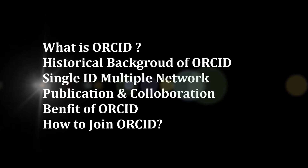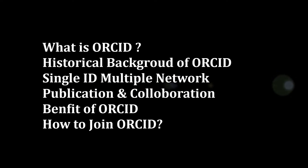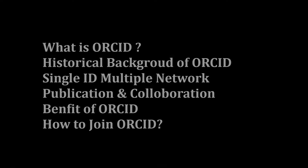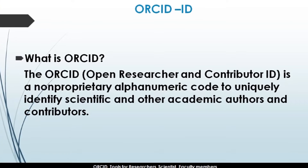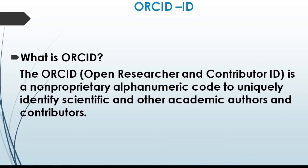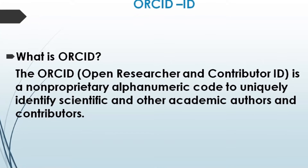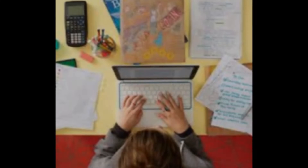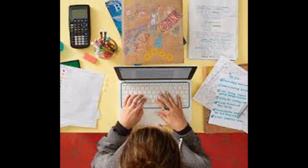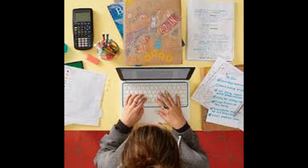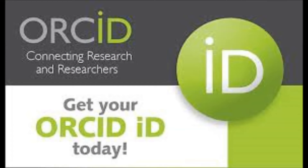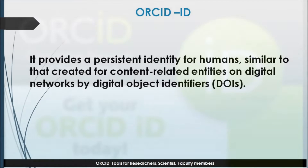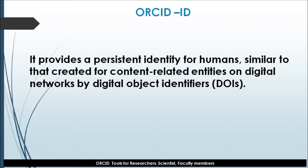We will also discuss how to create an account on ORCID ID. The ORCID researcher and contributor ID is a non-proprietary alphanumeric code to uniquely identify scientific and other academic authors and contributors. It provides a persistent identifier for humans, similar to what Digital Object Identifiers (DOIs) create for content-related entities on digital networks.